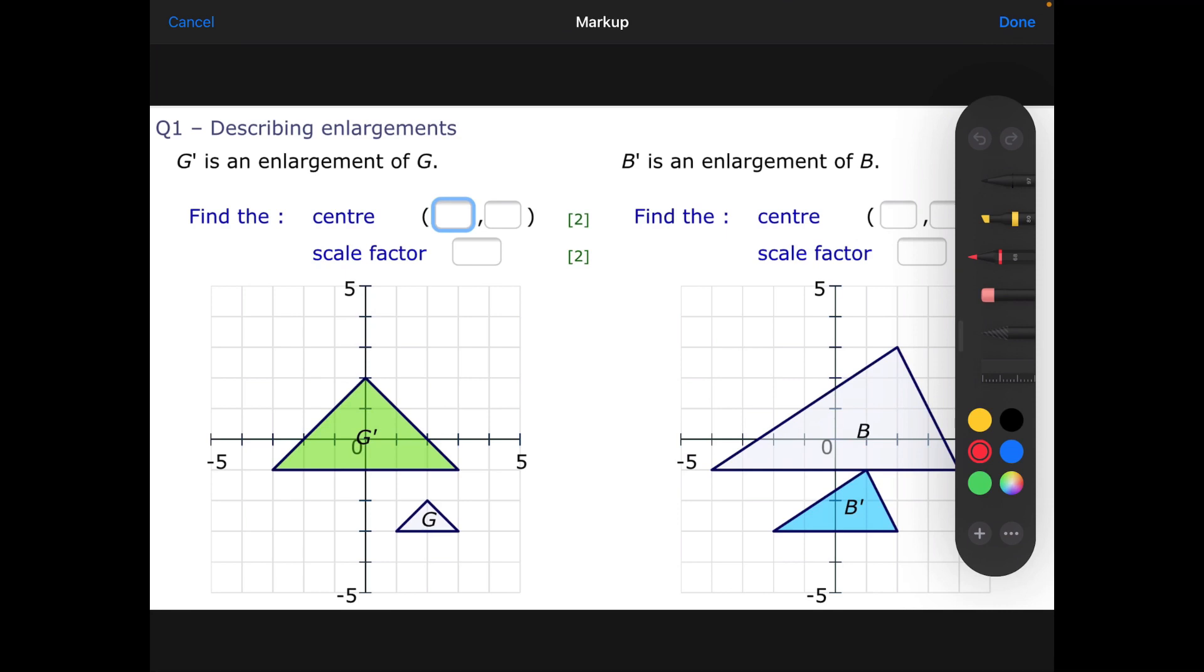You also have to provide the center of enlargement and the scale factor. Looking at the question on the left, G' is an enlargement of G, so we started with G and ended up at G dash. The easy thing is the scale factor. The bottom line is 2, and on the enlarged shape it's 6 long. So 6 divided by 2 is 3, meaning the scale factor is 3.